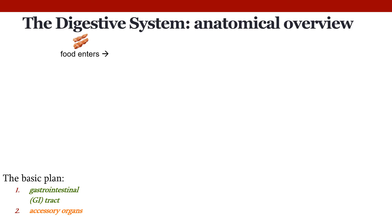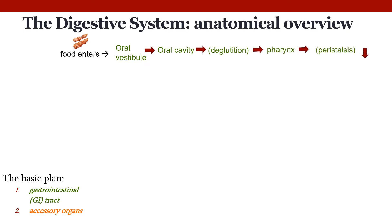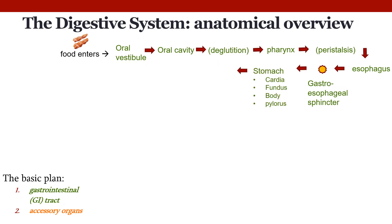Now I'm going to give a very brief anatomical overview of how food moves through the digestive system. The GI tract organs are shown in green. Food enters into the oral vestibule, then moves into the oral cavity. It is then swallowed — the fancy word for swallowing is deglutition. It moves into the pharynx, where peristalsis will move it into the esophagus. Food continues through the esophagus, passing through the gastroesophageal sphincter before entering the stomach.